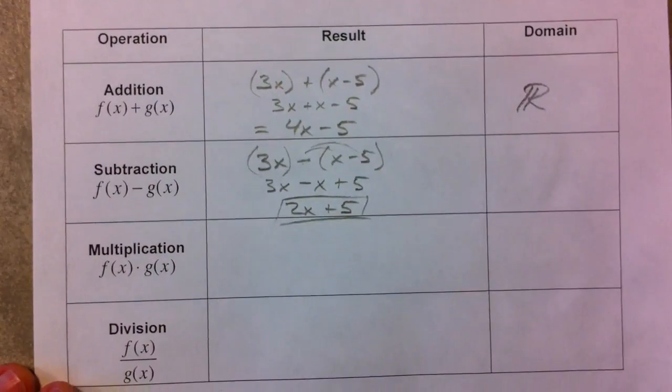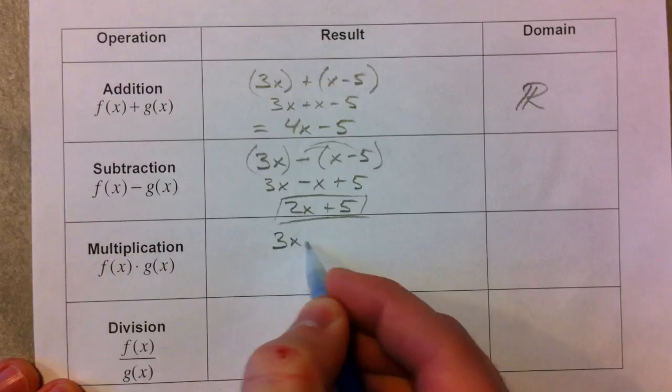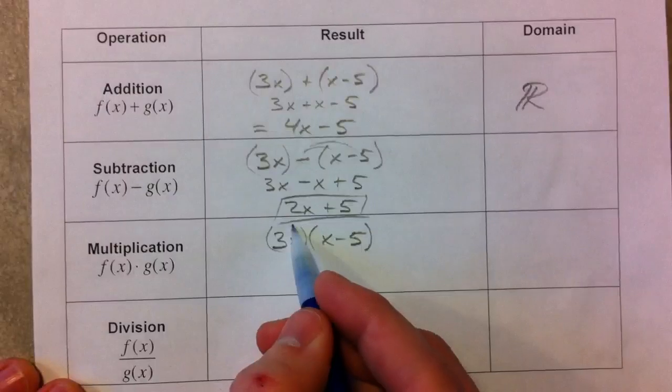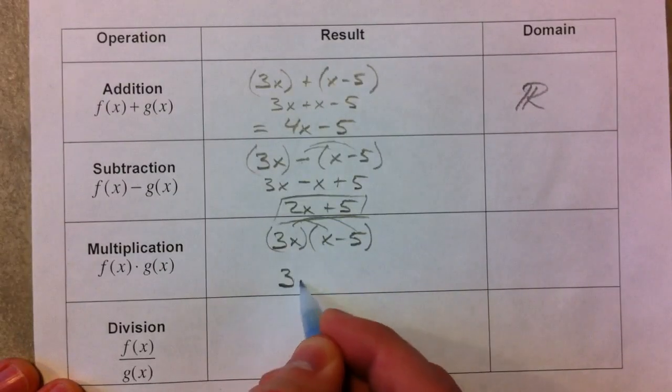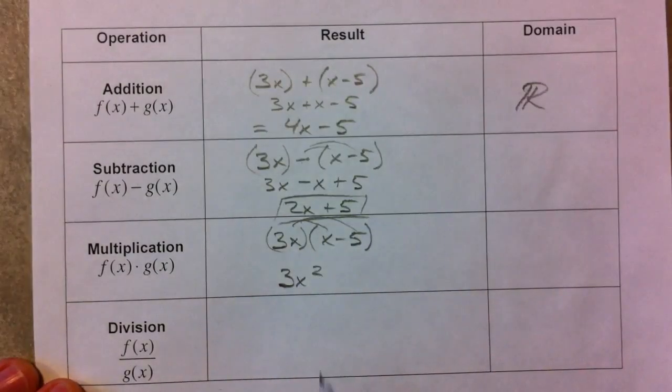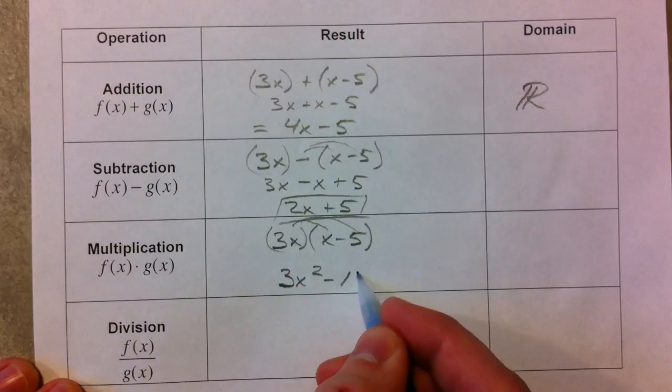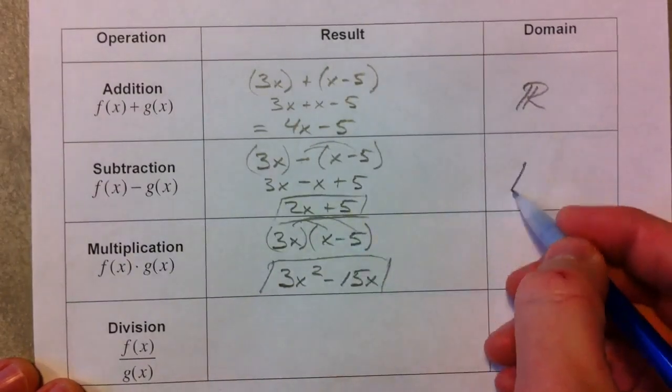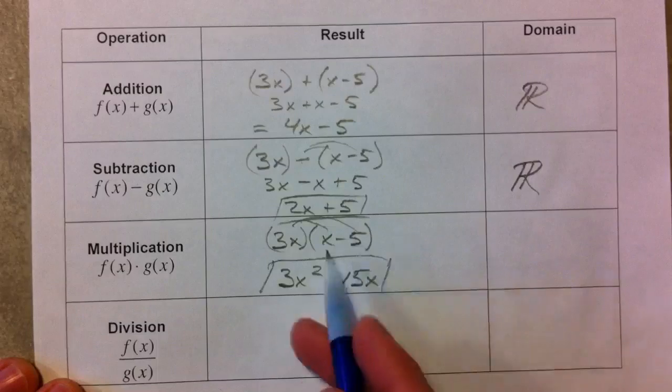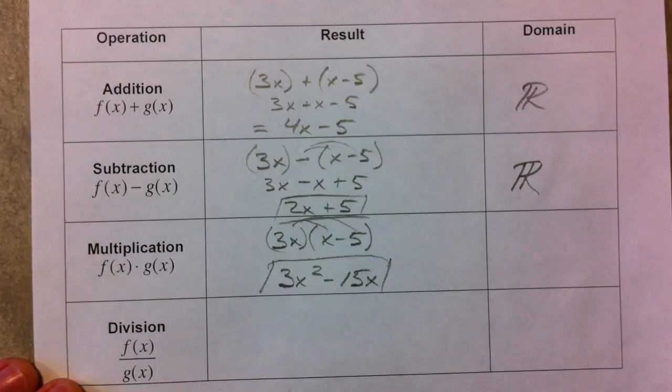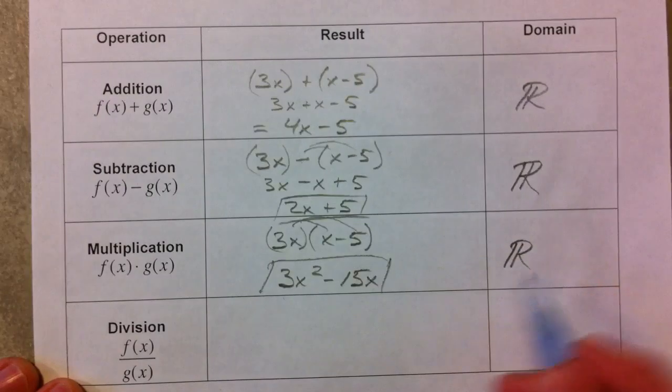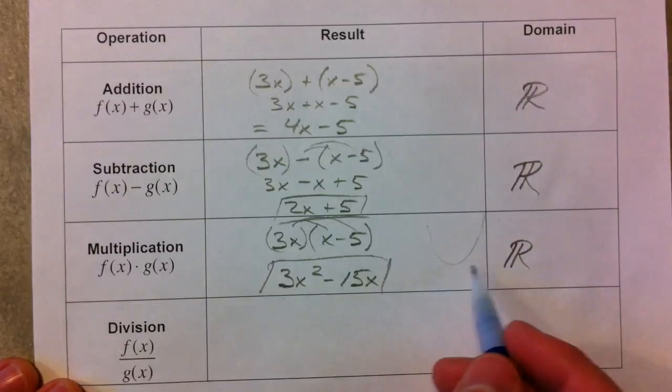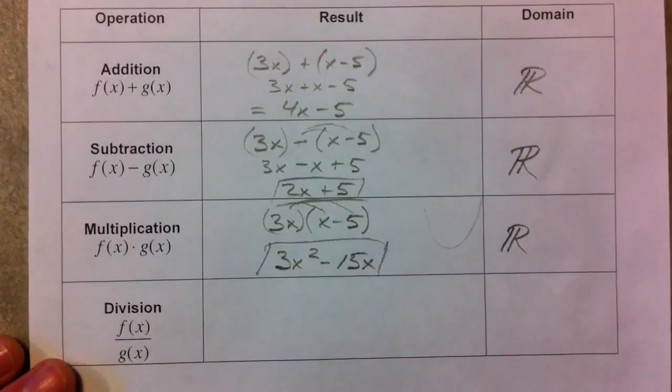Multiplication, again, same deal, but we're going to multiply 3x times x minus 5. So we have just a little distributive property here. 3x times x is 3x squared, and 3x times negative 5 is negative 15x. And so we have a quadratic again. Again, both of these, this one was linear again, and so the domain was all real numbers that we could plug in any x we wanted to. Any x goes into the quadratics as well. What's going to change here is the range. This is going to open up, and it's going to have a minimum value, so the range would be y is greater than or equal to some point.